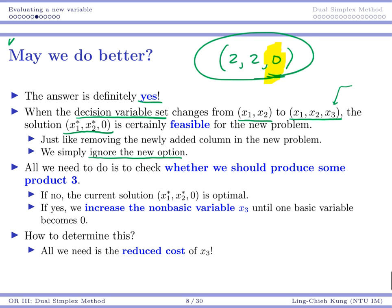It's always possible that your new option is so bad. It consumes so much resources, and it requires so many consumptions, and it can be sold at a low price. If that's the case, we should not consider product 3. If we should not consider, then the current solution would remain optimal, and then we're done.